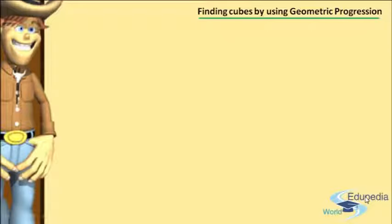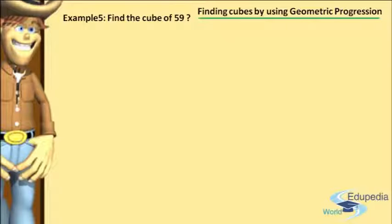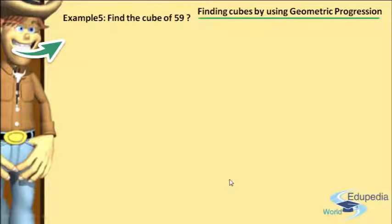Let us see what the examples are. The example I am going to take in this session is: find the cube of 59. To find the cube of 59, we have some procedure or steps that we have to follow. In our previous sessions we discussed the procedure or steps used to find the cube of a given two-digit number.